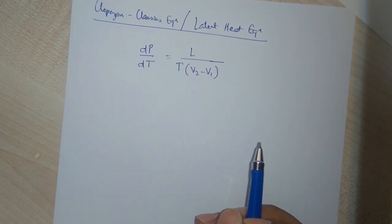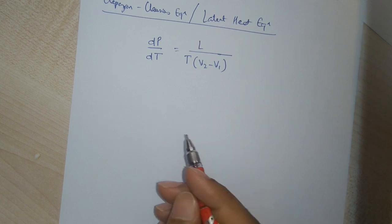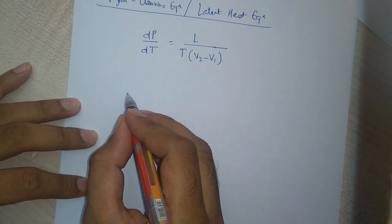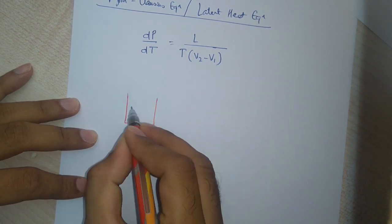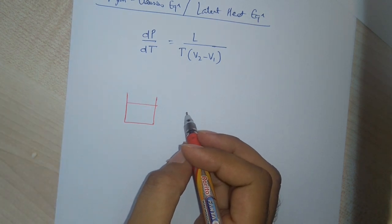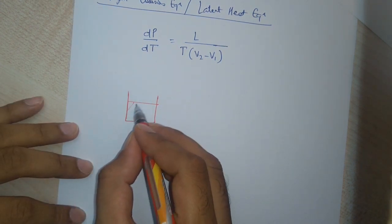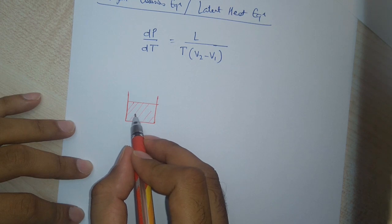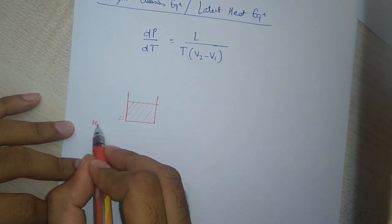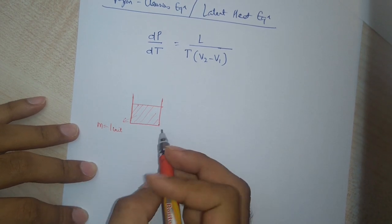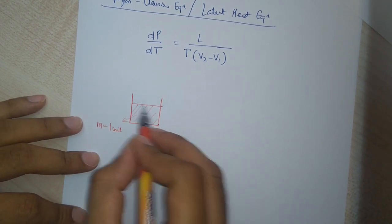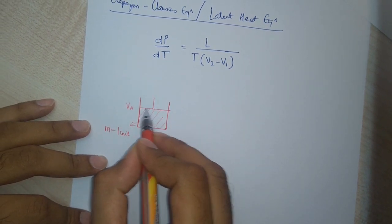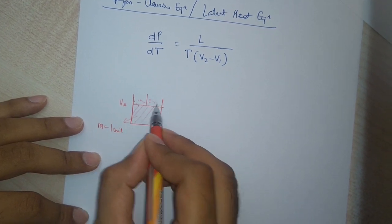To derive this relationship, we will be making use of the Carnot cycle. In this case, let us consider a Carnot engine. We have a container with a piston on it, and let us say we have a unit mass of a liquid in the piston. This is our working substance — a liquid of unit mass, M equals 1 unit. It has some volume VA and some pressure on it, with some weights placed on top.